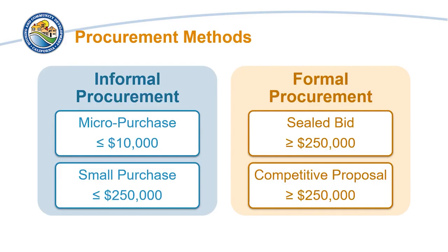There are four allowable methods of procurement: first, micropurchases; second, small purchases; third, sealed bids; and fourth, competitive proposals. Micropurchases and small purchases are referred to as informal procurements, whereas sealed bids and competitive proposals are referred to as formal procurements.